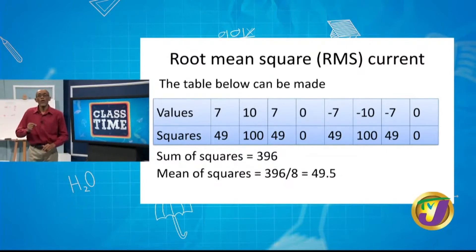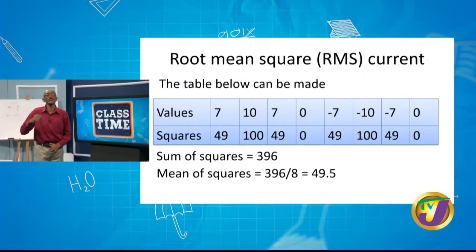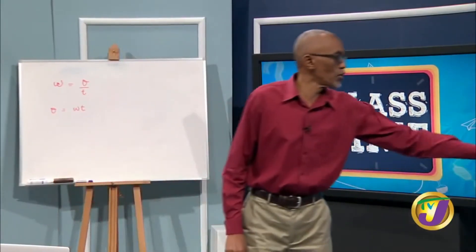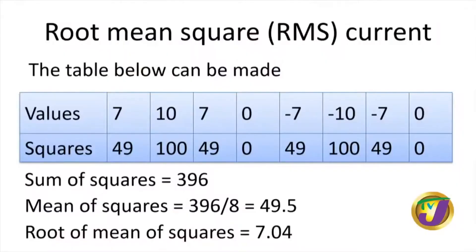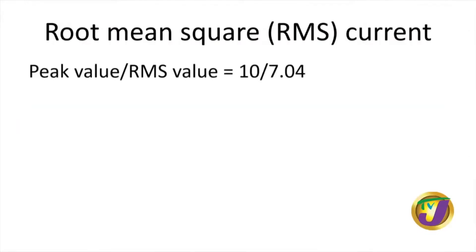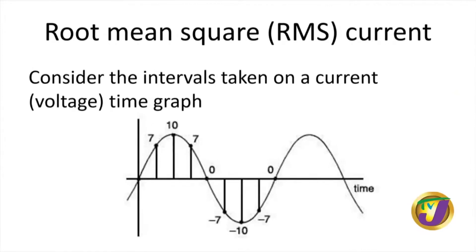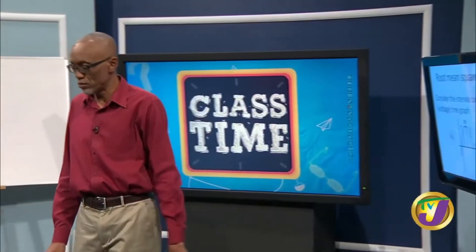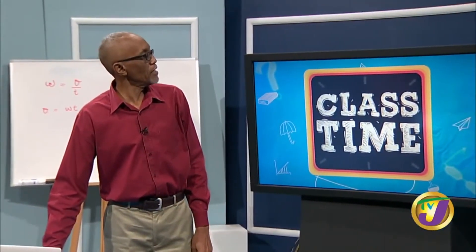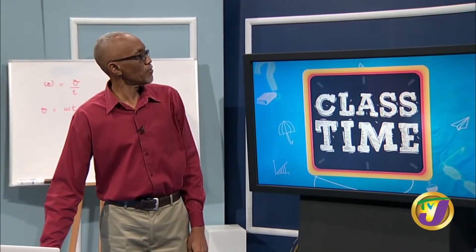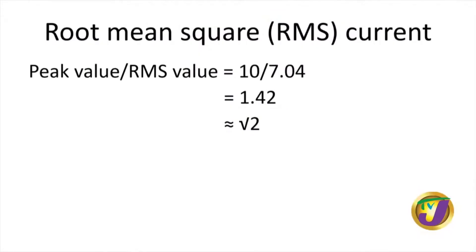Taking the square root of the mean of the squares gives √49.5 = 7.04. So the RMS value is 7.04. If we divide the peak value (10) by the RMS value (7.04), we get 1.42, which is approximately √2. If we had taken more points over the cycle, this ratio would converge closer and closer to √2.